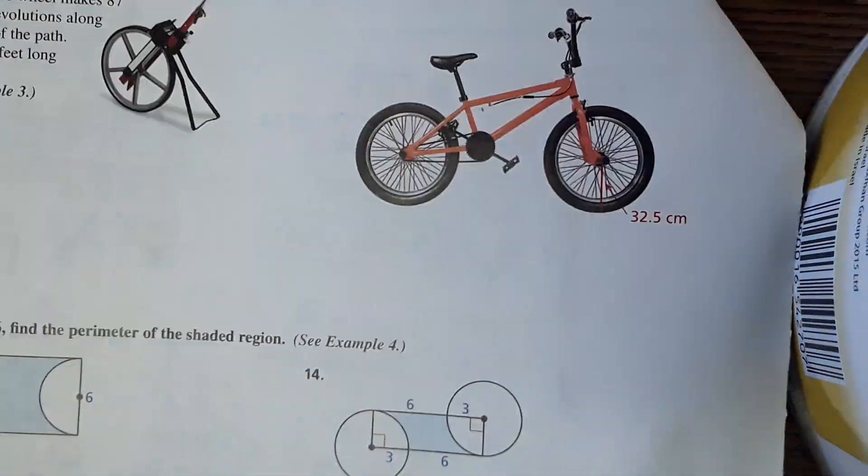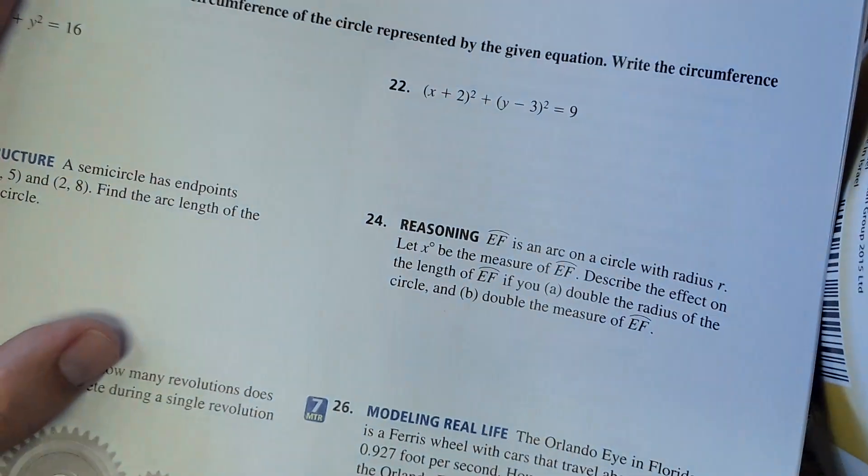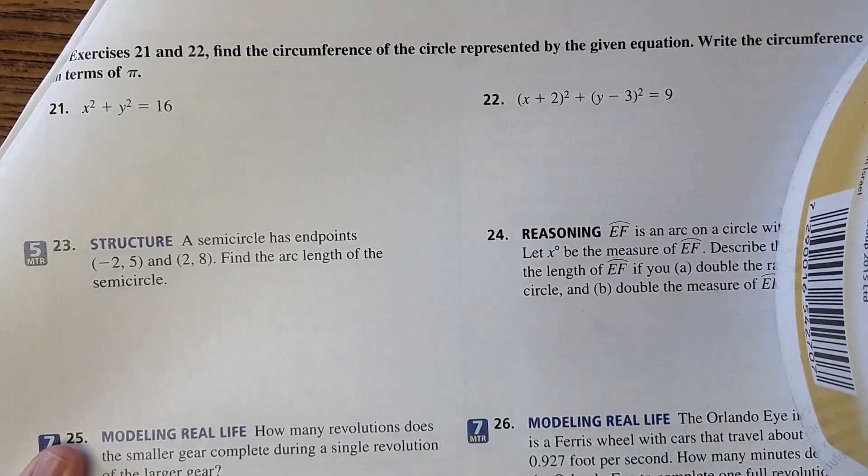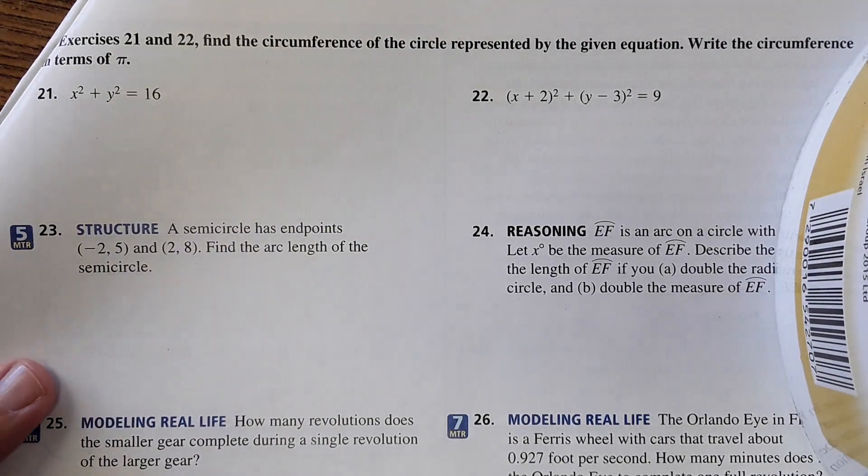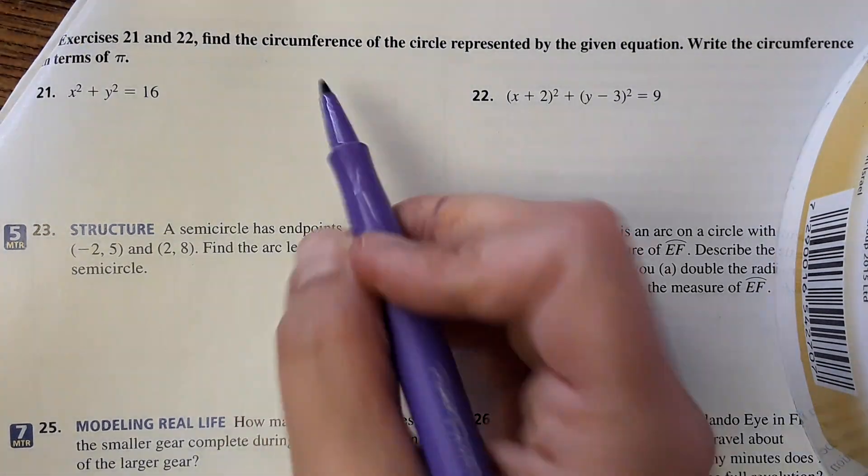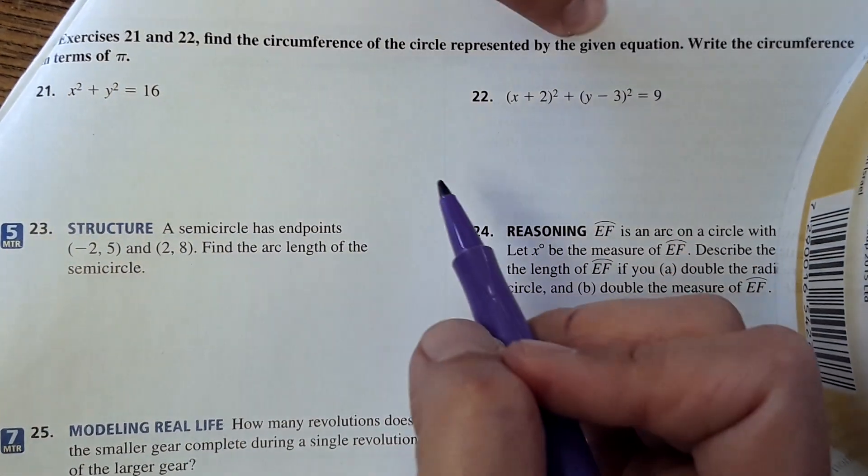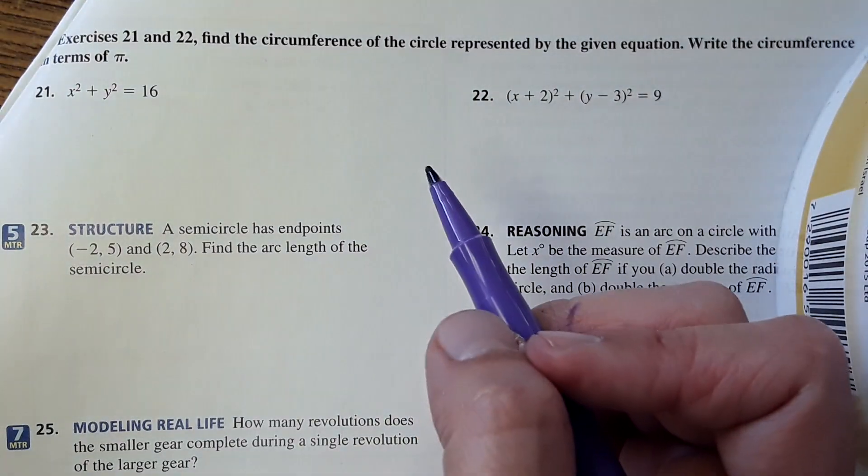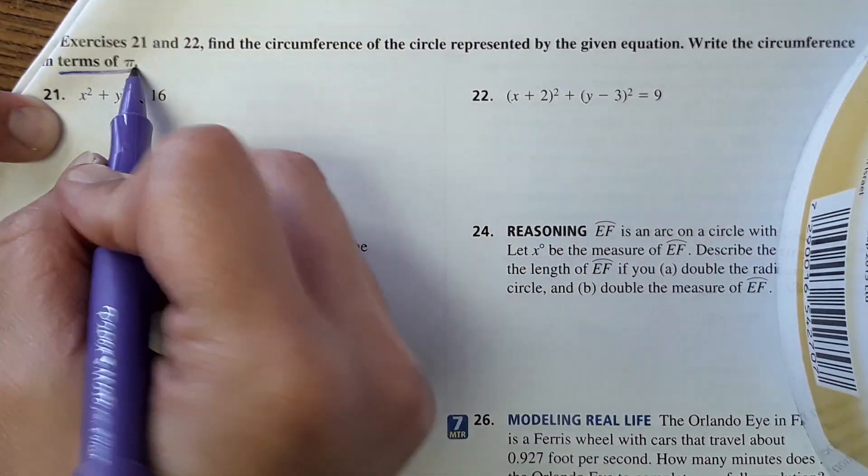Okay, so we're actually not going to do any of the problems in the back here. I'm just going to do 21 and 22 with you on the next page. Okay, 21 and 22 are kind of cool because they bring in yesterday's lesson and today's. So it says find the circumference of the circle represented by the given equation, write the circumference in terms of pi.